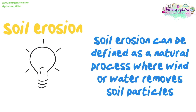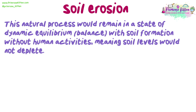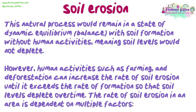Soil erosion can be defined as a natural process where wind or water removes soil particles. This natural process would remain in a state of dynamic equilibrium with soil formation without human activities, meaning soil levels would not deplete. However, human activities such as farming and deforestation can increase the rate of soil erosion until it exceeds the rate of formation, so that soil levels deplete over time.